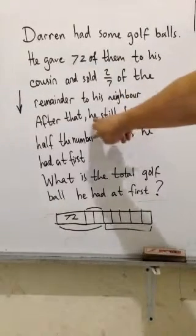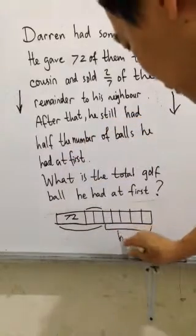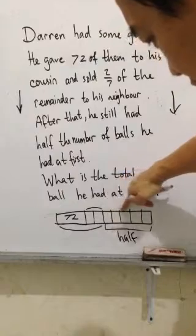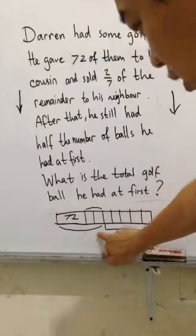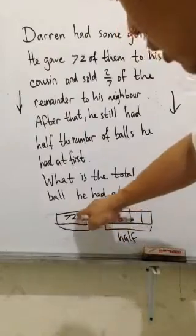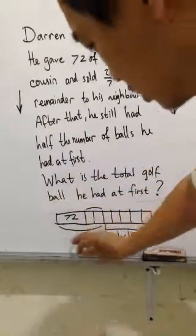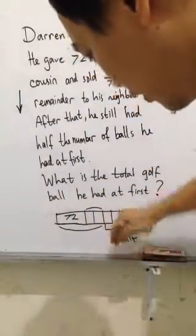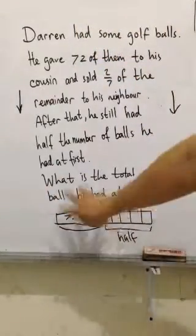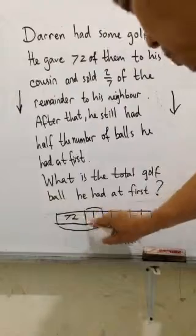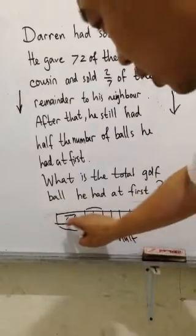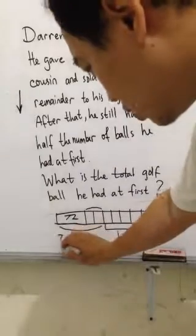We go back to this story, because he still had half in the end. This part here is what is left. Half — so that means all he gave and all he sold is also another half, because half and half make one whole. So because the half is 5 units, that means 72 is 3 units.